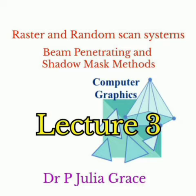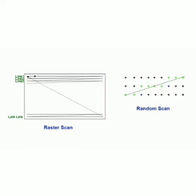Point seven: solid patterns are easy to fill in raster scan but tough to fill in random scan. Point eight: raster is mainly used for photos like JPG, PNG file formats, but random is used for high quality images. Point nine: shadow mask technology comes under raster and beam penetration technology comes under random scan.